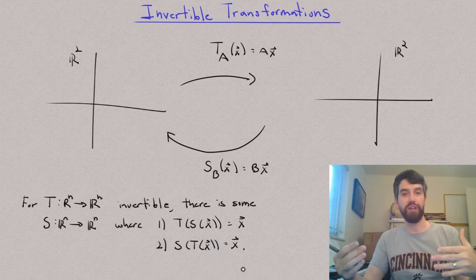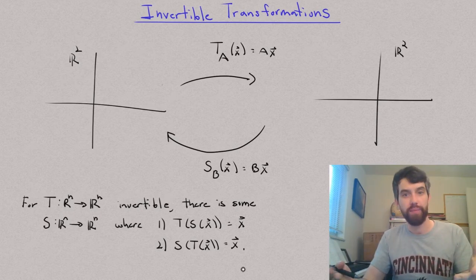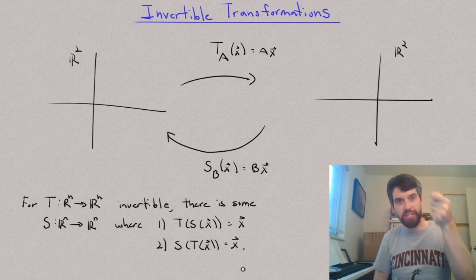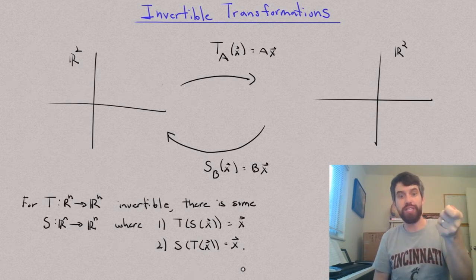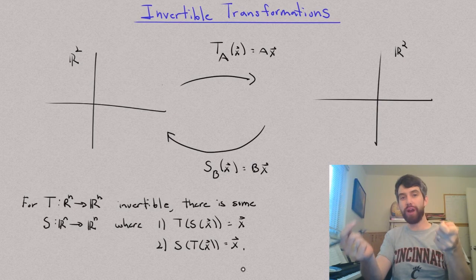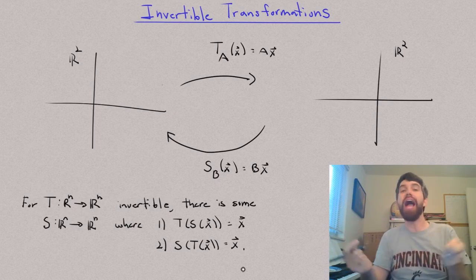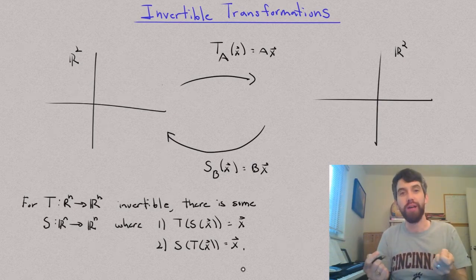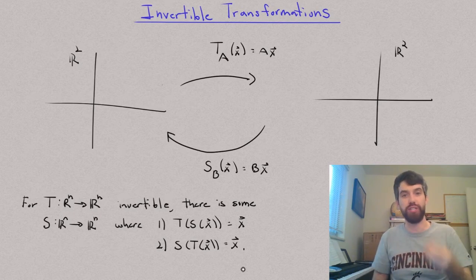So what I have here is an existence claim. If I start with a transformation T and I want to know, is that transformation T invertible? Then I say, is there some other transformation S where either way that I could compose them, I'm going to get an effect, an identity transformation. It takes an X vector just to itself.